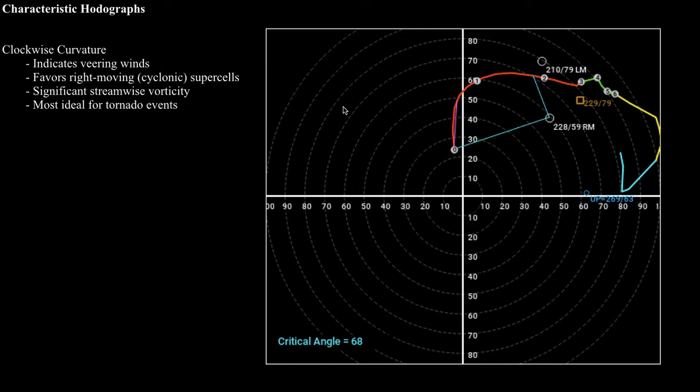If you've got strong veering winds, that's very favorable for cyclonic supercells — that is, right-moving supercells. Typically the stronger the curvature in the hodograph, the more directional wind shear that's present, which means your thunderstorms are going to be rotating much more intensely than if you had a unidirectional wind profile where the wind direction is not changing very much as you go up in the atmosphere.